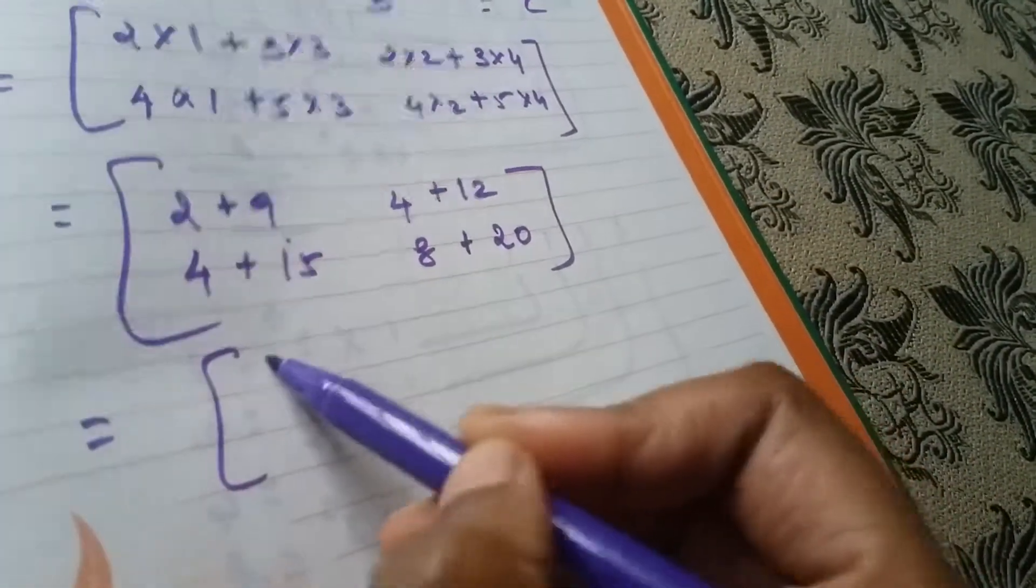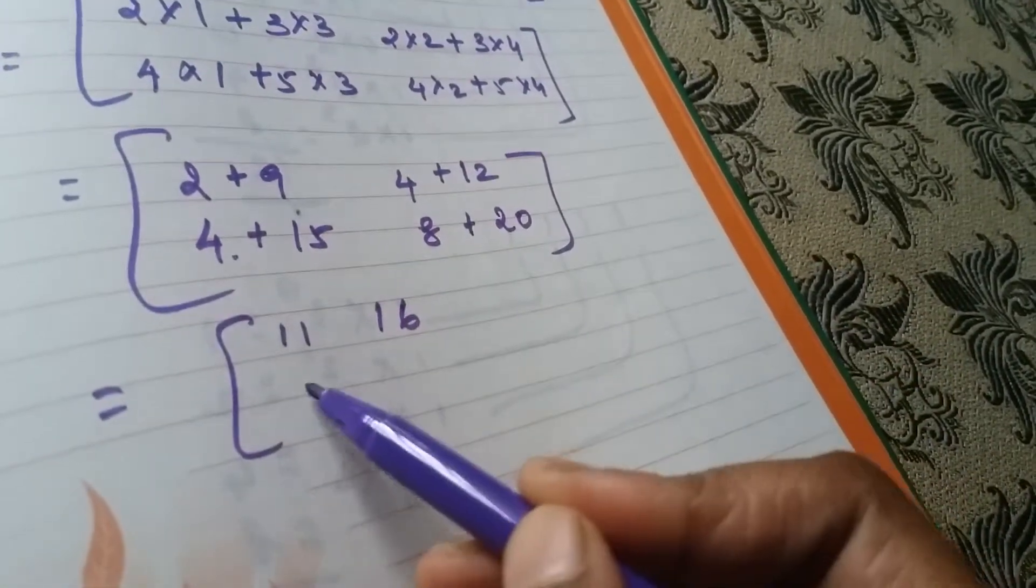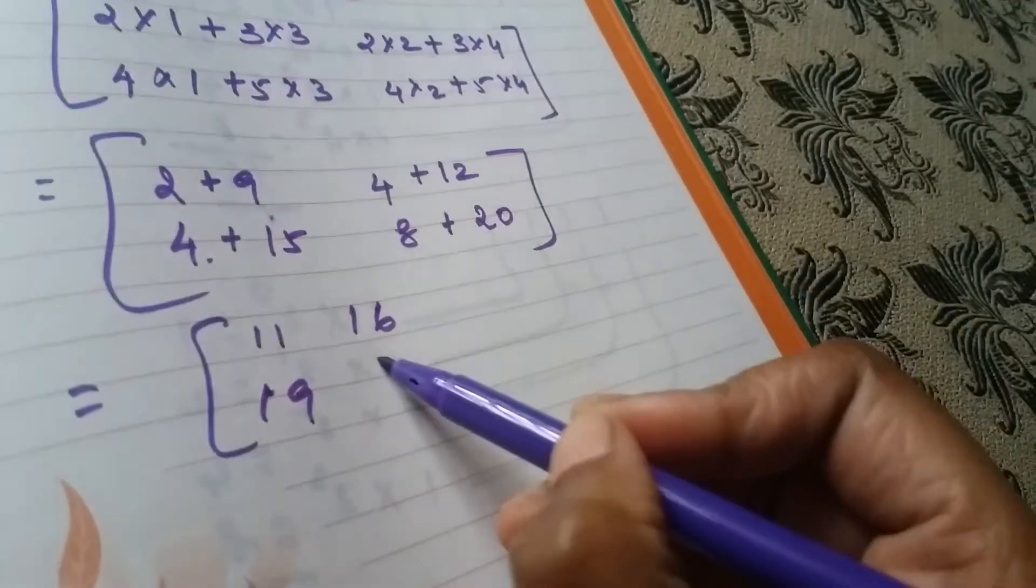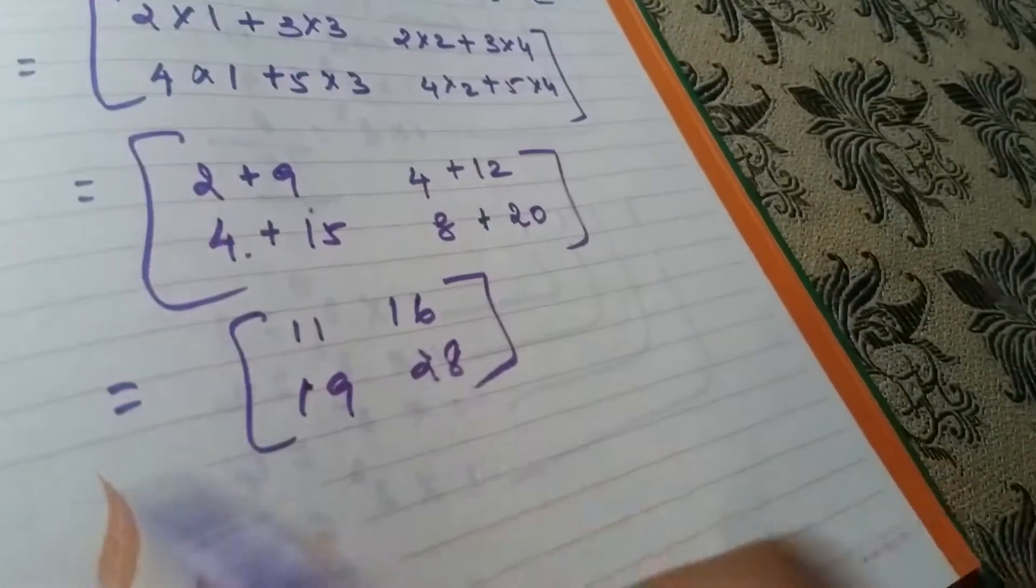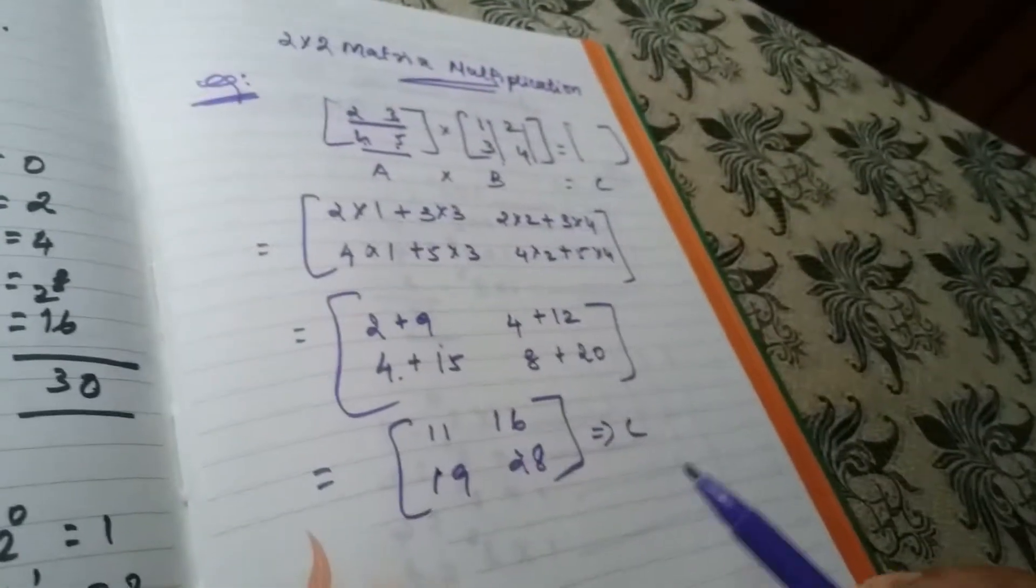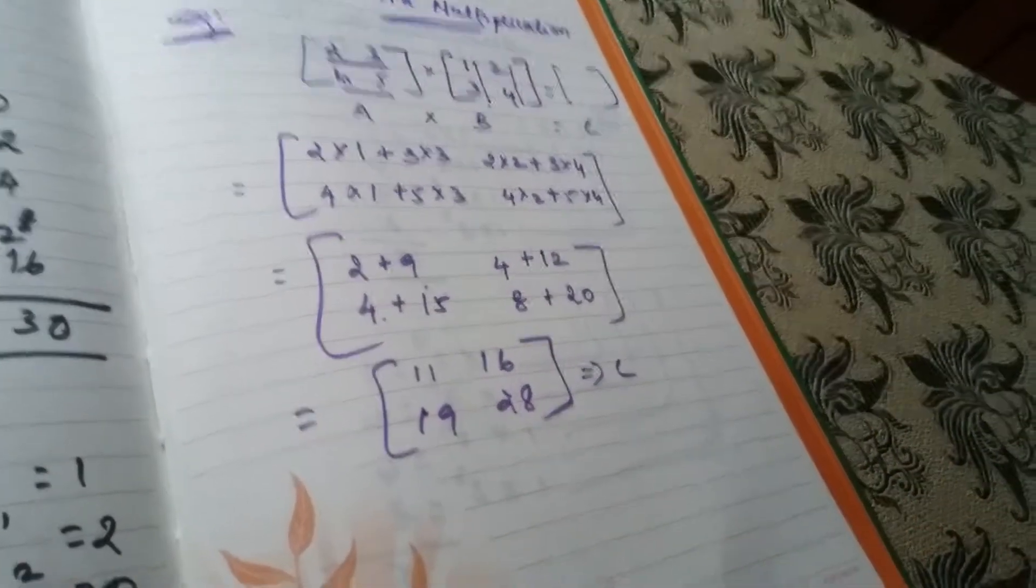So, 11, 16, 19, 28. This is your C. That's very simple. Try it. Thank you for watching.